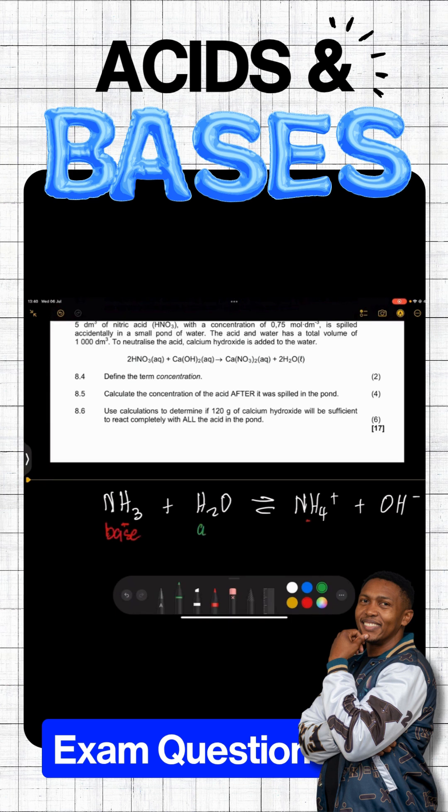So, if this is a base, this must be an acid. Now, let's go for the reverse reaction. Starts as NH4 in the reverse, right? Ends up as NH3. So, what happened to NH4 to end up as NH3? It must have donated an H plus, so this guy must actually be an acid.